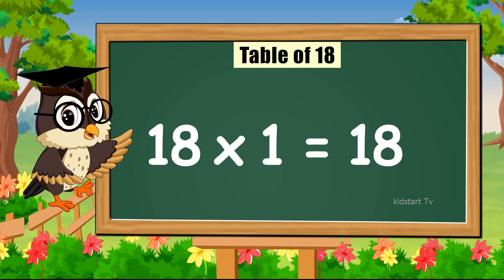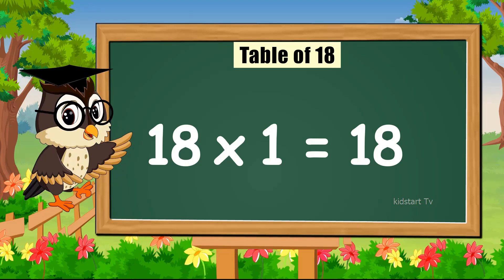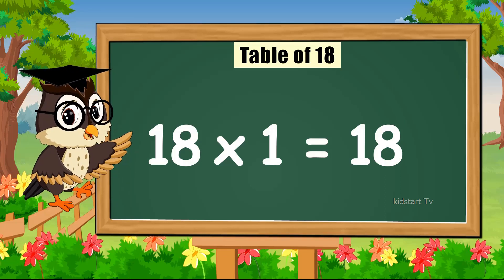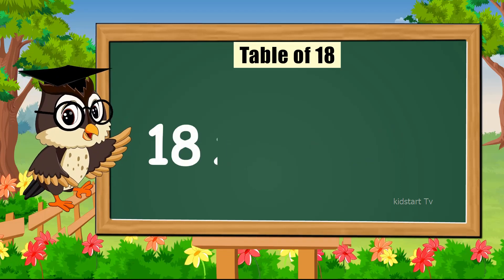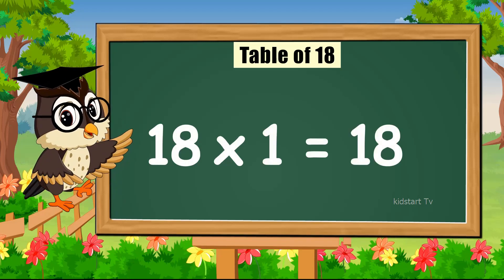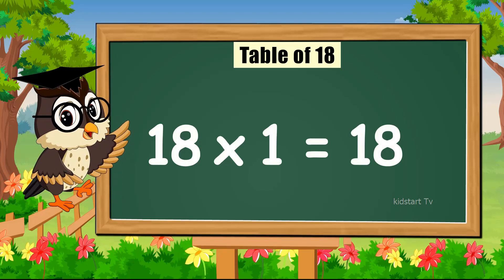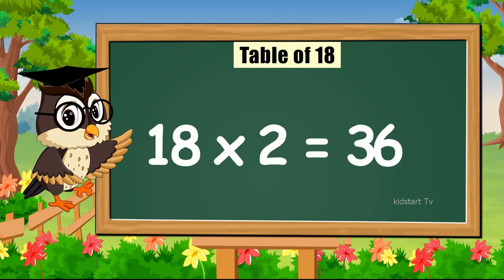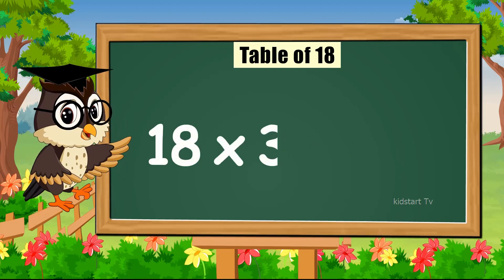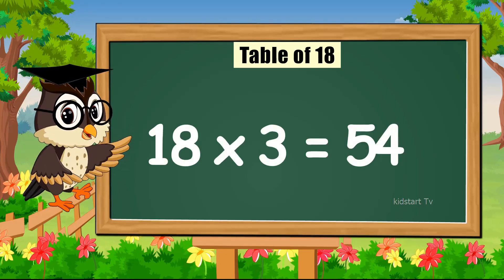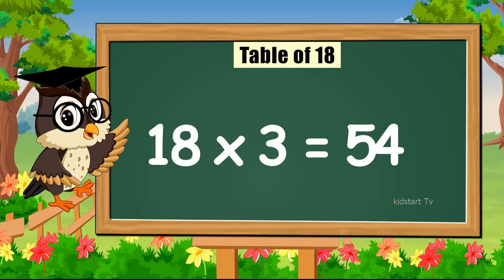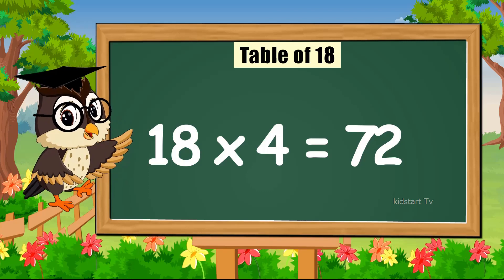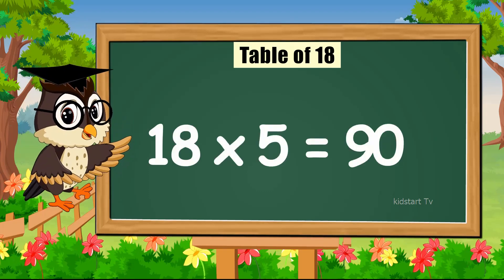Hello everyone, we are gonna learn today. Sing with me the table of eighteen. Come on! Eighteen times one is eighteen. Eighteen times two is thirty-six. Eighteen times three is fifty-four. Eighteen times four is seventy-two. Eighteen times five is ninety.